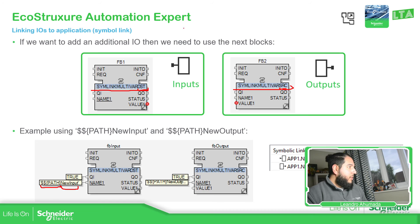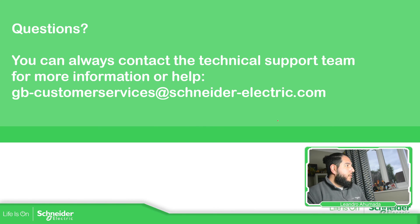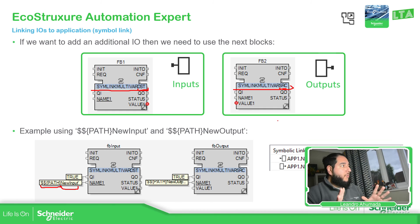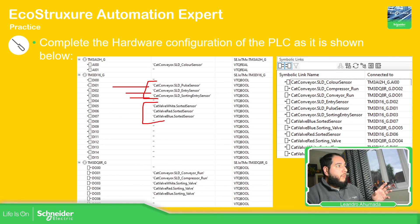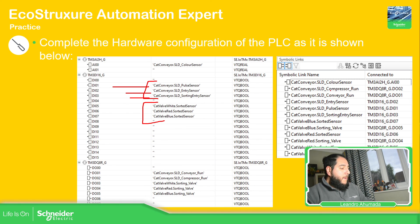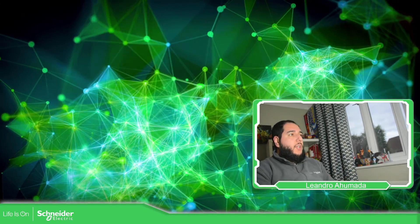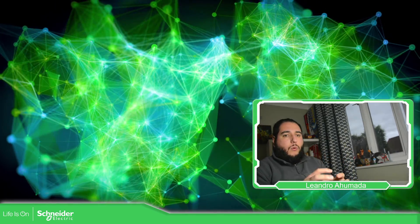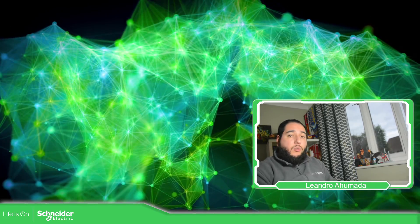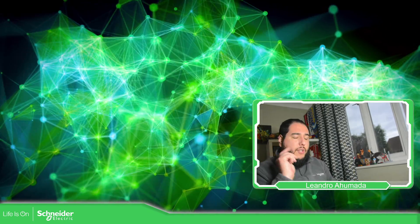And this is it for this part — for the mapping IO, for linking IO using the symbol link. Once you know it, it's easy. In our case, we already have our application done, and someone has already created the symbol link for us, so we just need to map it in our configuration. This is it for the symbol link — how to map the logic that we have using the symbol link to our physical TM3 devices. Thank you very much for watching this video, and I'll see you on the next one.